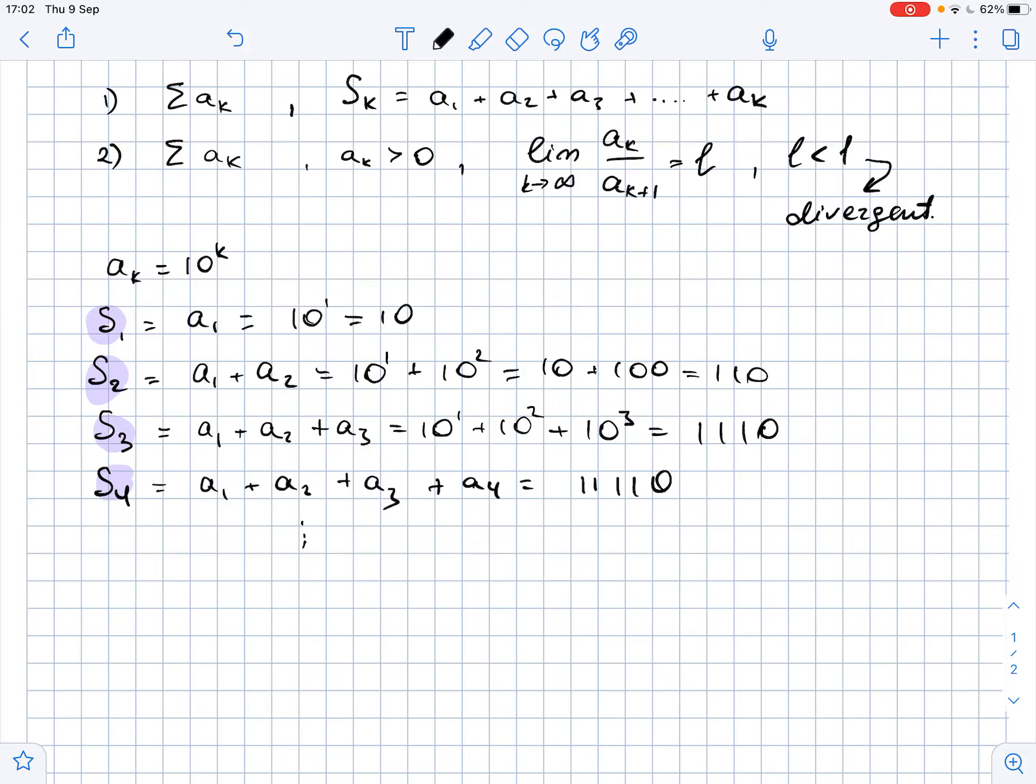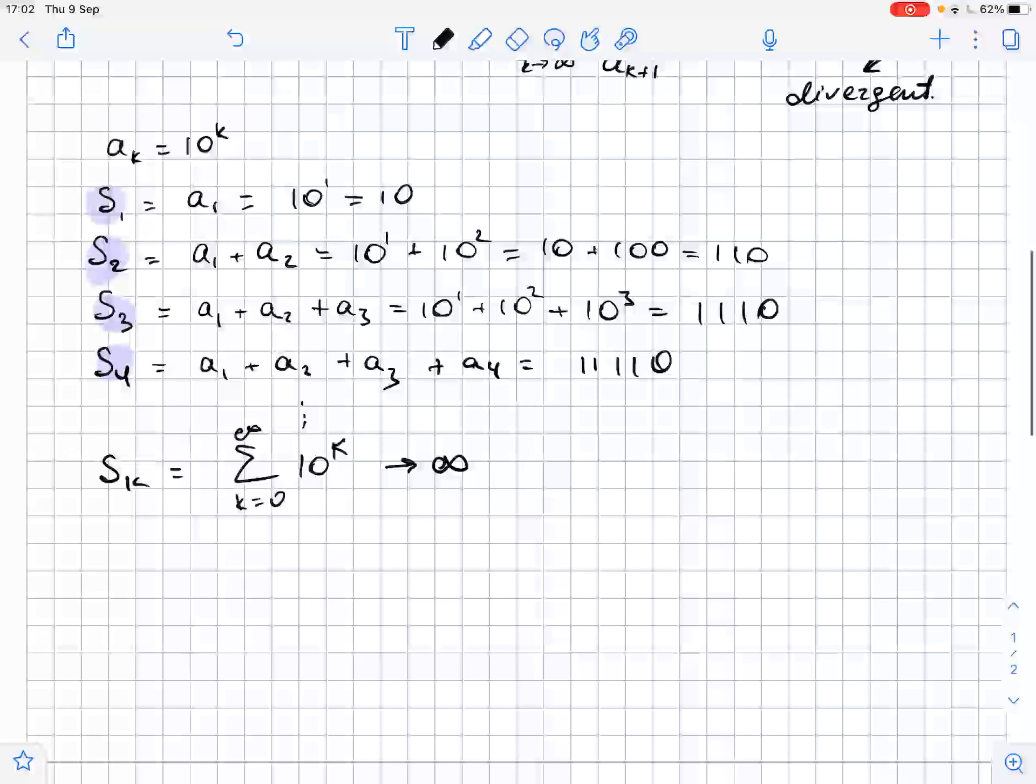And we can state that the sum SK, which equals the sum of 10 to the power of K where K goes from 0 to infinity, because as you can see S2 is larger than S1, S3 is larger than S2, S4 is larger than S3, and so on. So if K approaches infinity, our sum SK also approaches infinity.